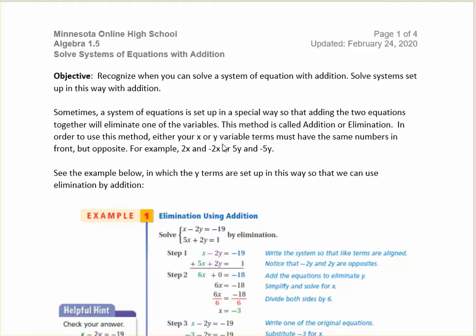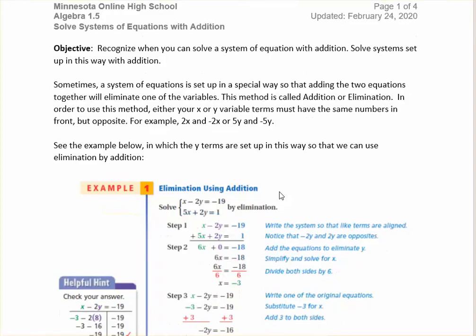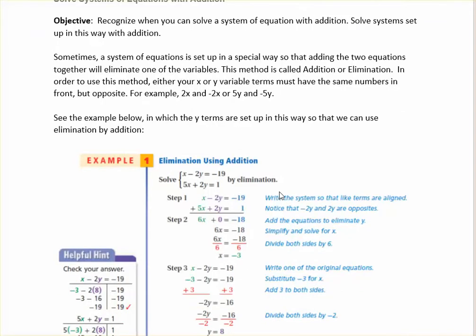So it's using algebra again. It's a system of equations — linear equations — so we'll have two variables, usually x and y, and two equations, and we are going to solve by adding the equations together. In order to use this method, we have to have them set up for elimination. Let's look at this example to see what I mean.